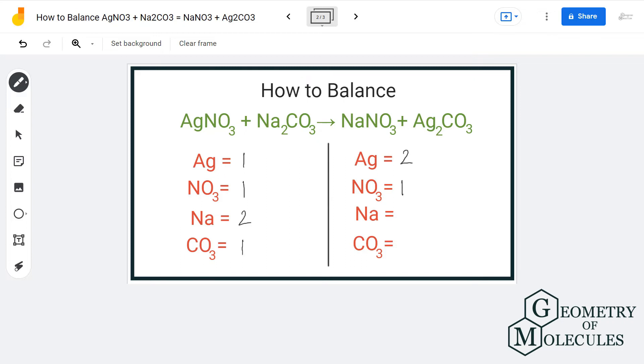One NO3 group, one sodium atom, and one CO3 group. Okay, so the first issue that you can notice over here is we have two atoms of silver on the product side and only one on the reactant side.